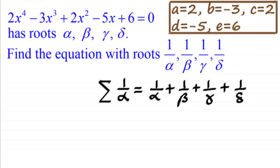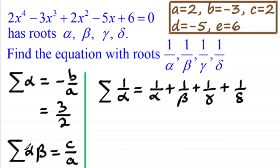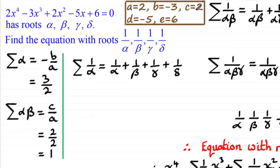The sum of the roots, sigma alpha — meaning alpha plus beta plus gamma plus delta — equals minus b over a. Substituting in, that's minus(−3) divided by 2, which gives 3/2. The sum of the product pairs of roots, sigma(αβ), equals c over a. With c = 2 and a = 2, that gives 2/2 = 1.